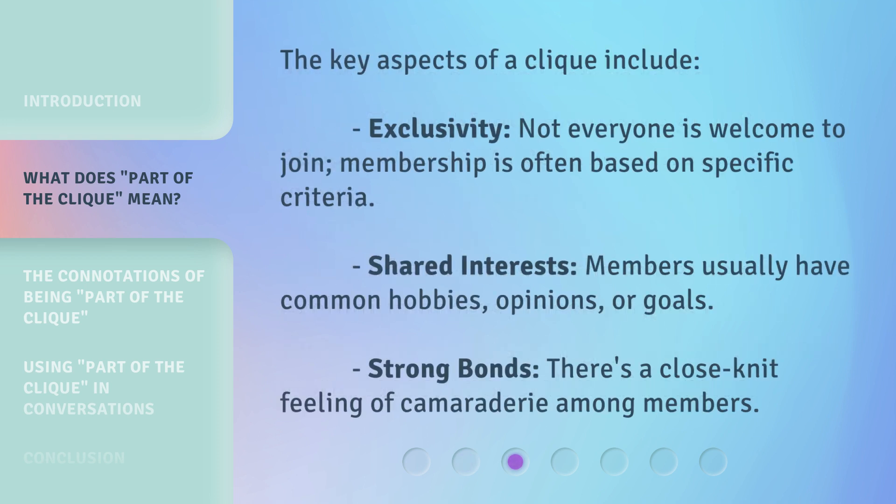The key aspects of a clique include: Exclusivity — not everyone is welcome to join, and membership is often based on specific criteria. Shared interests — members usually have common hobbies, opinions, or goals. Strong bonds — there's a close-knit feeling of camaraderie among members.